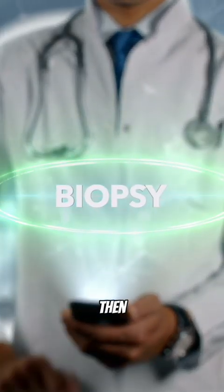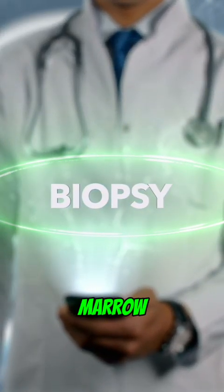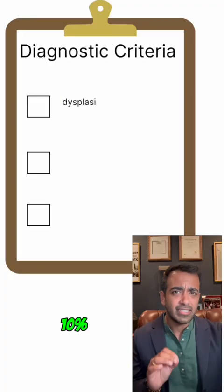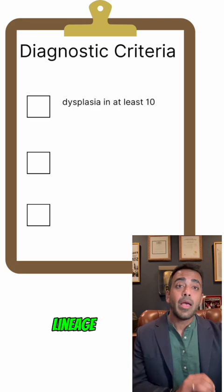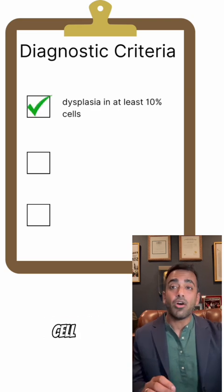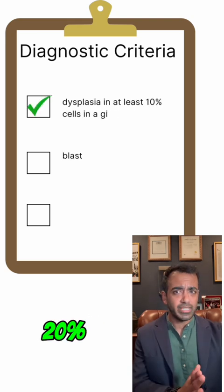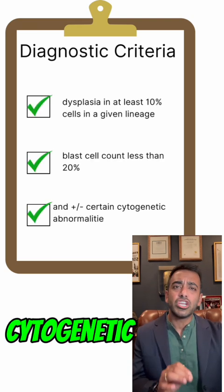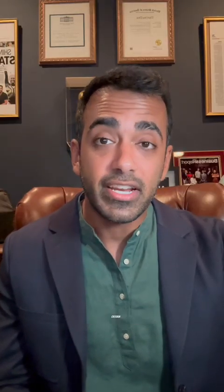If this workup is non-revealing, you then proceed with a bone marrow biopsy, which is the gold standard for diagnosing MDS. Patients must have dysplasia in at least 10% of cells in a given lineage, a blast cell count less than 20%, and plus or minus certain cytogenetic abnormalities to meet MDS diagnostic criteria.